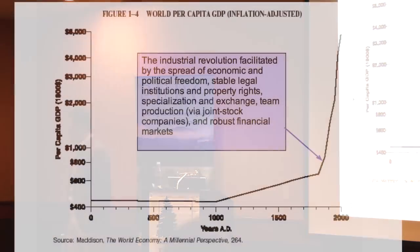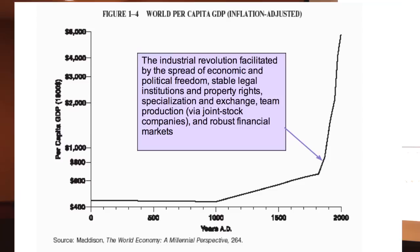I'd like to start with a different starting point. This is a graph put together about 20 years ago by a British historian named Angus Madison. It's a compilation of data that allowed him to say something about worldwide GDP per capita over the last 2,000 years. It's a remarkable undertaking. Over the last 20 years, this data has withstood the challenges it has received. A couple of noteworthy things: first, how flat the line is for the first 1,000 years, and how it's not that much steeper for the next 800 years or so. It's not until about 1820 that the line kinks up, rather dramatically.